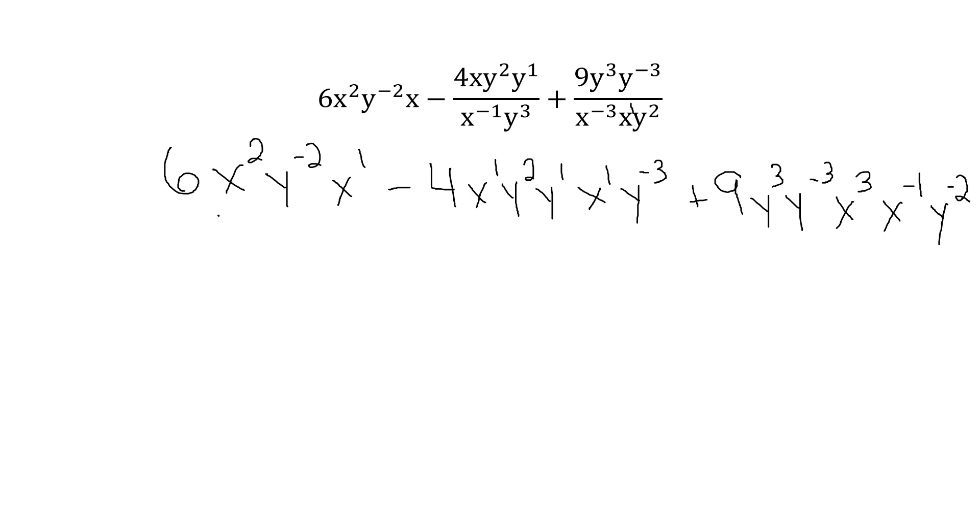Now let's look within our terms. Within this term, I have an x squared and an x^1, which gives me x cubed. y^2, y^1, y^-3. 2 plus 1 is 3. 3 minus 3 is 0. So that just goes away. Technically, it becomes a 1, but within the term, it goes away. It just vanishes.